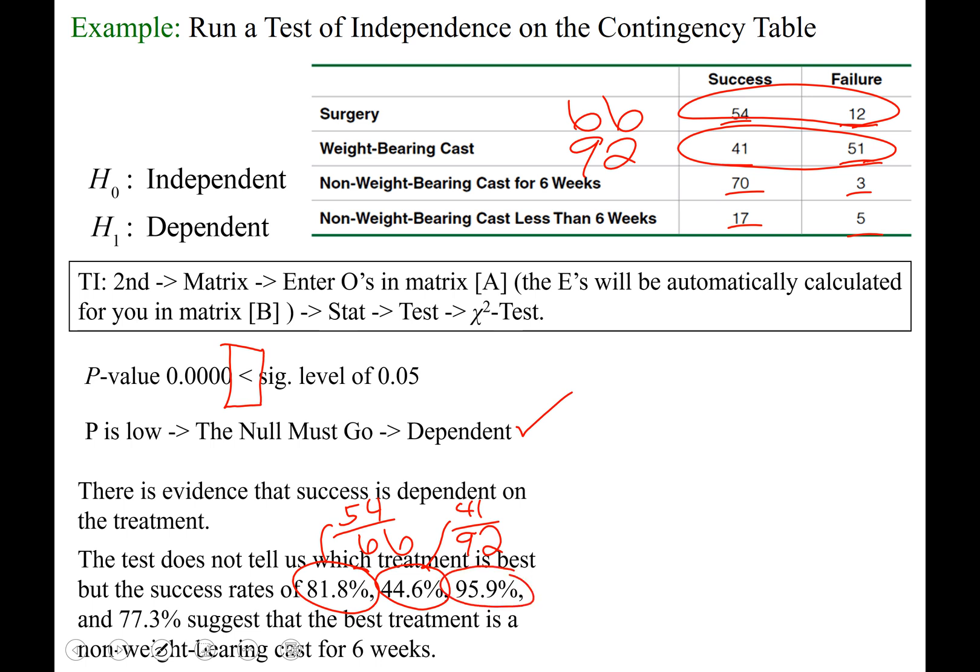Non-weight-bearing cast for six weeks, that looks like it has the best success rate of 95.9%. That is calculated by 70 divided by the total number of people that went through that treatment, which is 73.